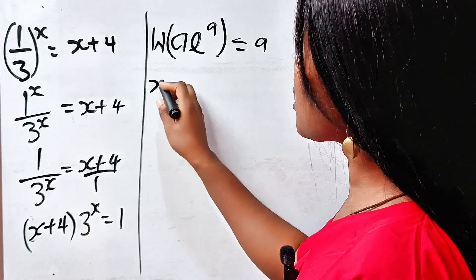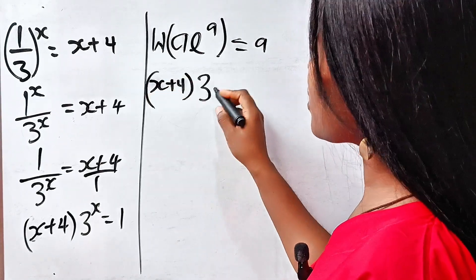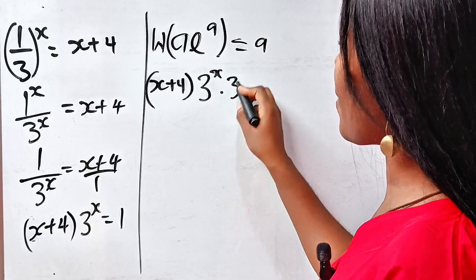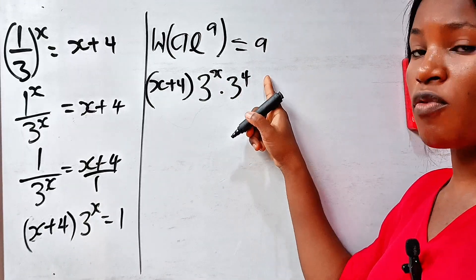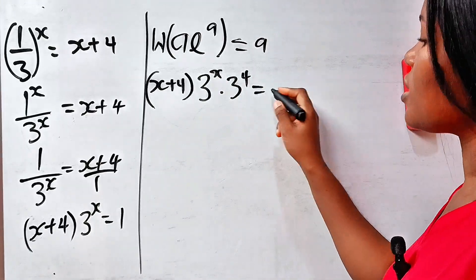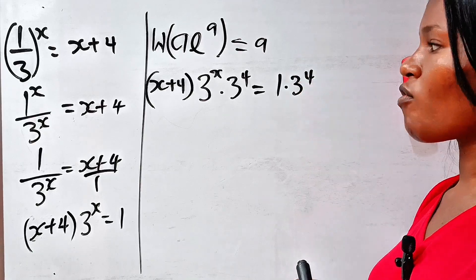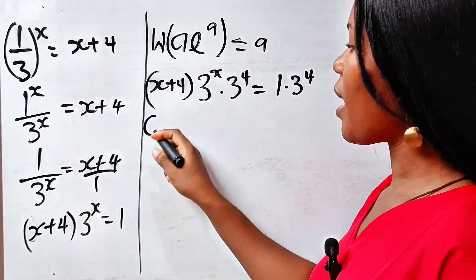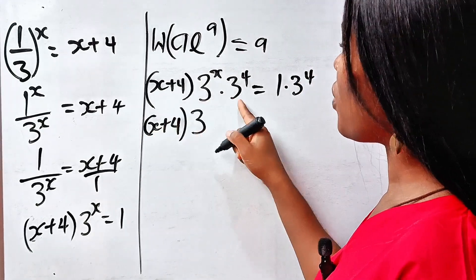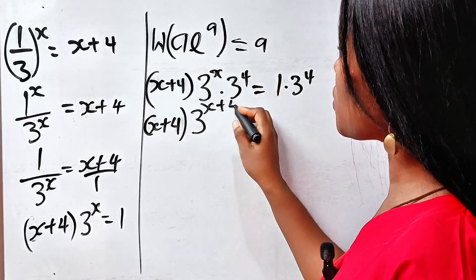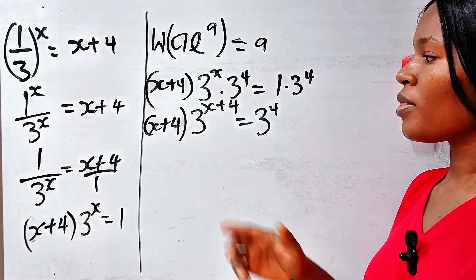So we have (x + 4) multiplied by 3^4 multiplied by 3^x multiplied by 3^4, equal to 1 multiplied by 3^4. We pick one base and add the powers to get x plus 4, so this equals 3 to the power of x plus 4, which equals 3 to the power of 4.